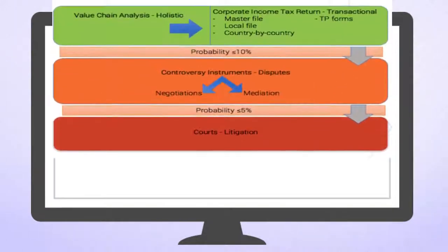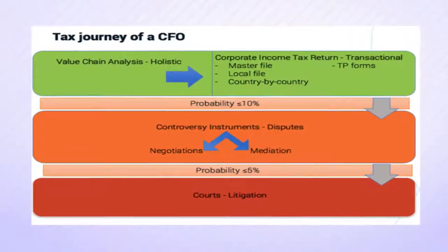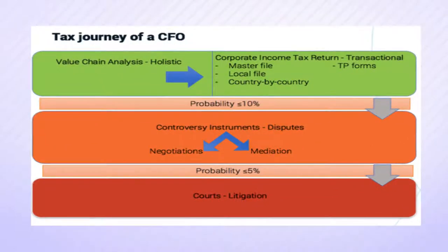A holistic value chain analysis can significantly reduce your chances of a dispute with tax authorities. If a dispute were still to arise, controversy management instruments such as APAs, negotiations, and mediation could further reduce the chances of such a dispute landing in the courts.